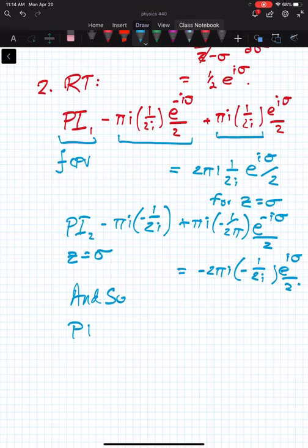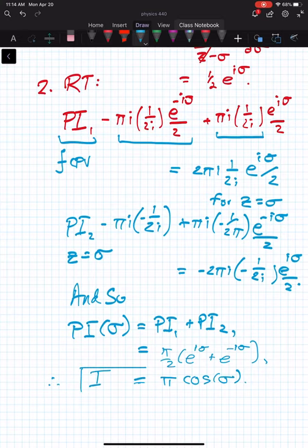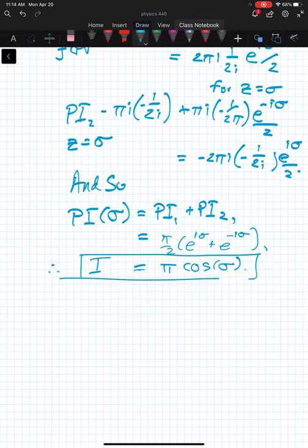So the principal value of that total integral at sigma is equal to the principal value 1 plus principal value of 2, and that equals pi halves times e to the i sigma plus e to the minus i sigma, which, happily enough, is pi times cosine of sigma. So in other words, we solve for that. So, again, I think I mentioned this. This is, yay, we've solved this complicated integral.